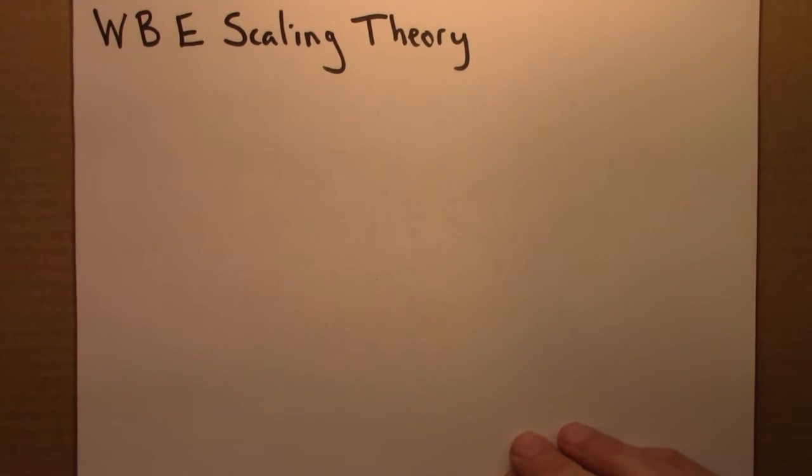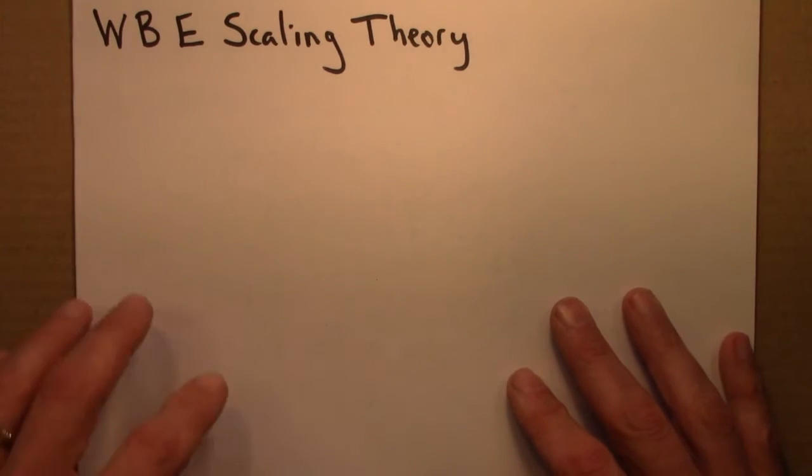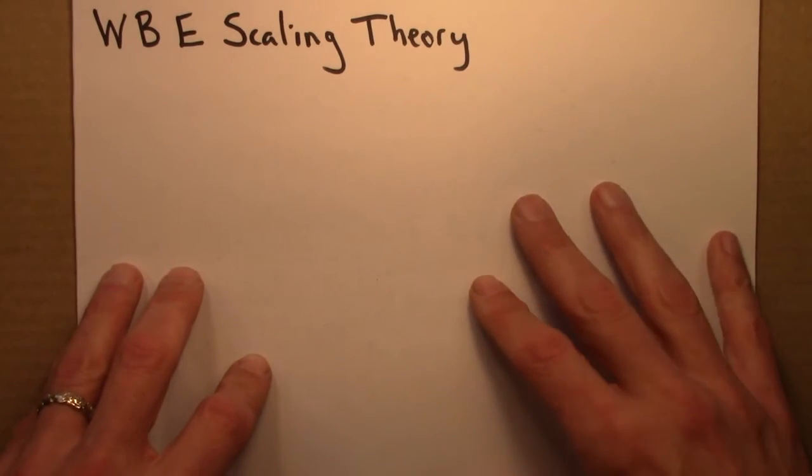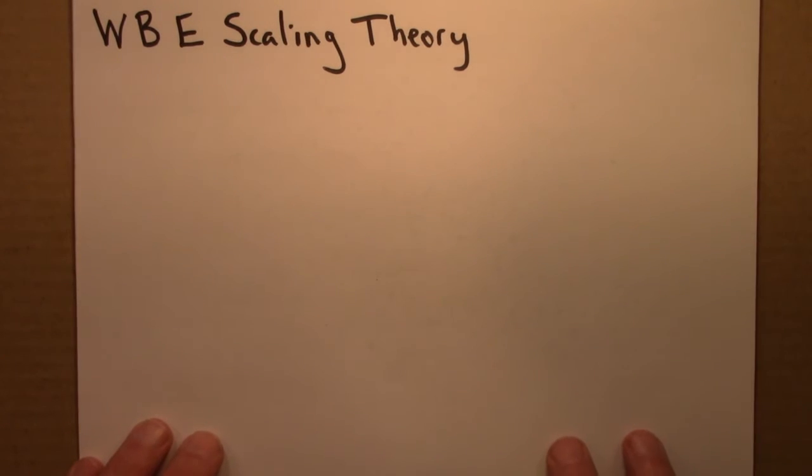I'll sketch the argument and highlight some of the assumptions behind the West Brown-Enquist theory for metabolic scaling. Again, I'm not going to get into any of the mathematical details. So the West Brown-Enquist scaling theory begins with the assertion, the claim, that the metabolic rate is determined by the properties of the vascular network.